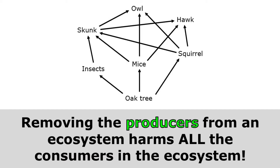Removing the producers from an ecosystem harms all the consumers in an ecosystem. So if I cut down all the oak trees in this ecosystem, that means there's no food or shelter for insects, mice, or squirrels. So all of the insects, mice, and squirrels that use the oak tree as a food source are going to have to leave or they'll die.